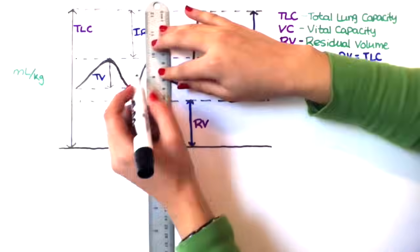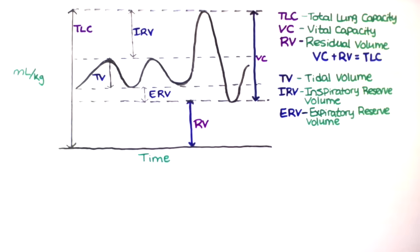The expiratory reserve volume is the amount of gas that an individual can exhale beyond a tidal expiration. So as you're sitting there and exhale normally and then push all the gas out that you possibly can, that's your expiratory reserve volume.